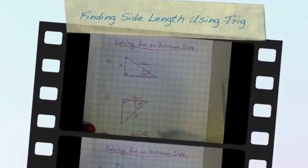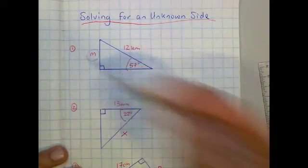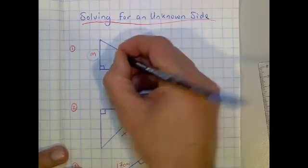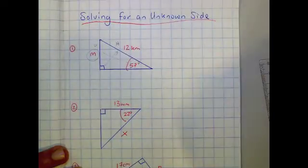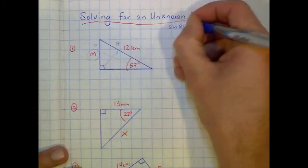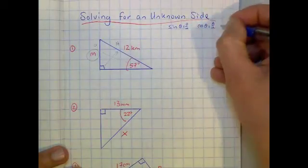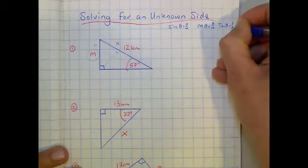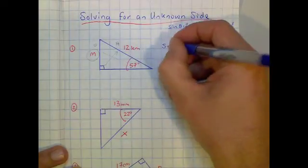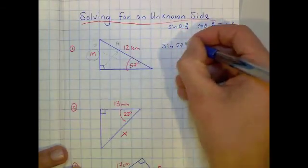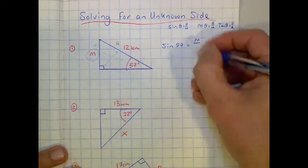We're going to try and solve some sides on a right angle triangle. We're solving for the letter M using our trig ratios, so we label our triangle: H is the longer side, O is the opposite side because it's opposite the angle. We write down SOH CAH TOA. We need O and H, so we choose sine. We put the angle in — that's 57 — with M on top and 12 on the bottom.